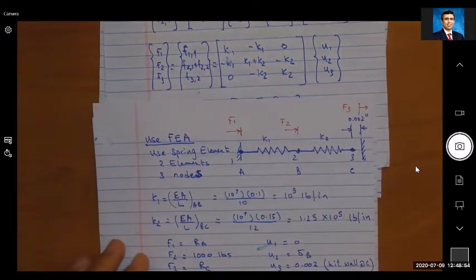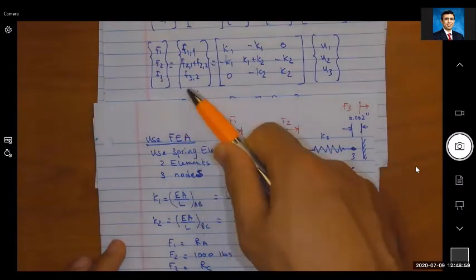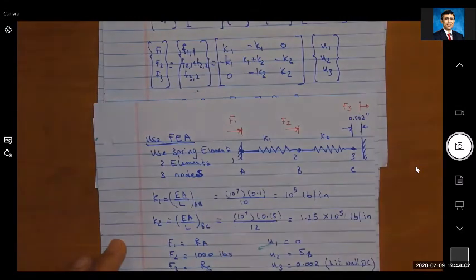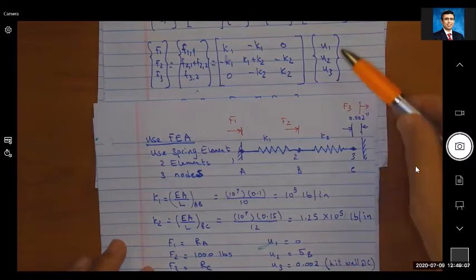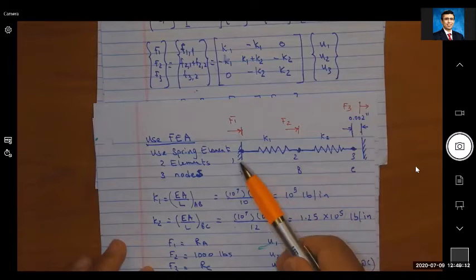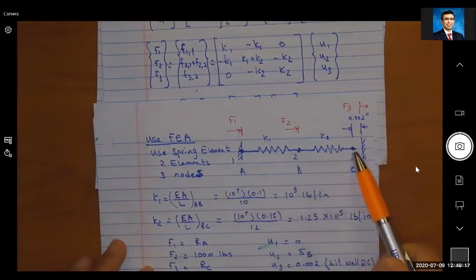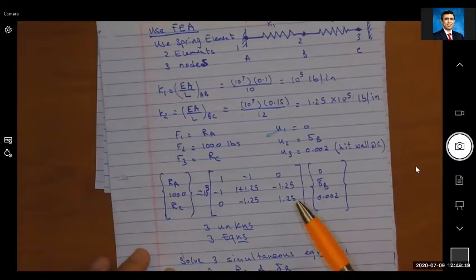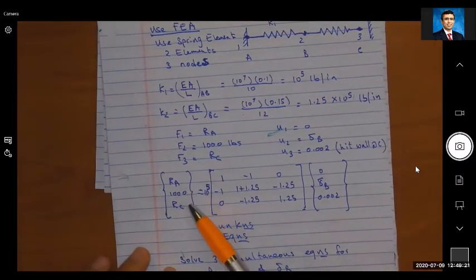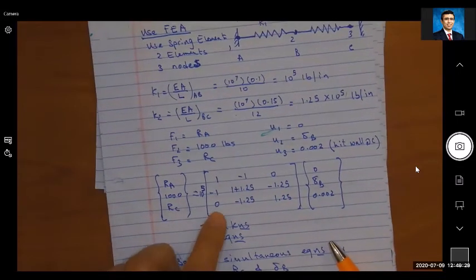The unknowns in this case: we know that the displacement at 3 is going to be 0.002, displacement at 1 is 0, displacement at 2 is delta B. Now if you look carefully, I have one, two, three unknowns. So I know I have three unknowns, so I'm going to write my global stiffness equations. So I'm going to take what I have here and substitute for it.